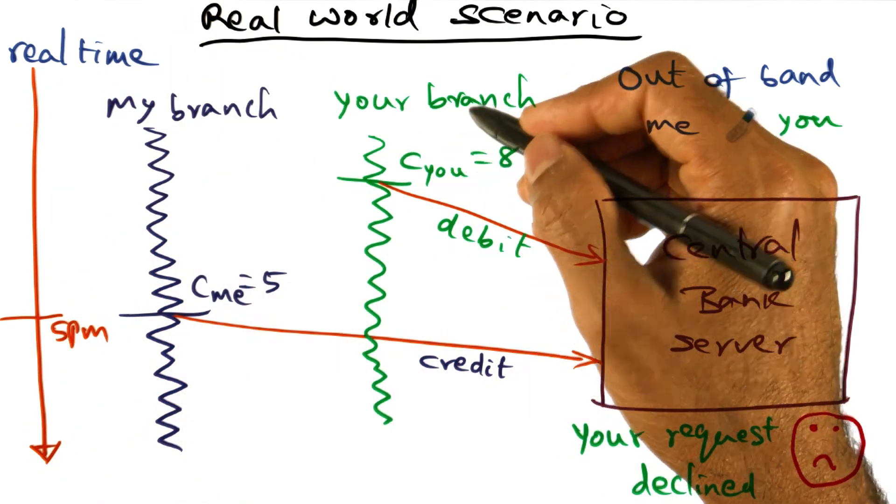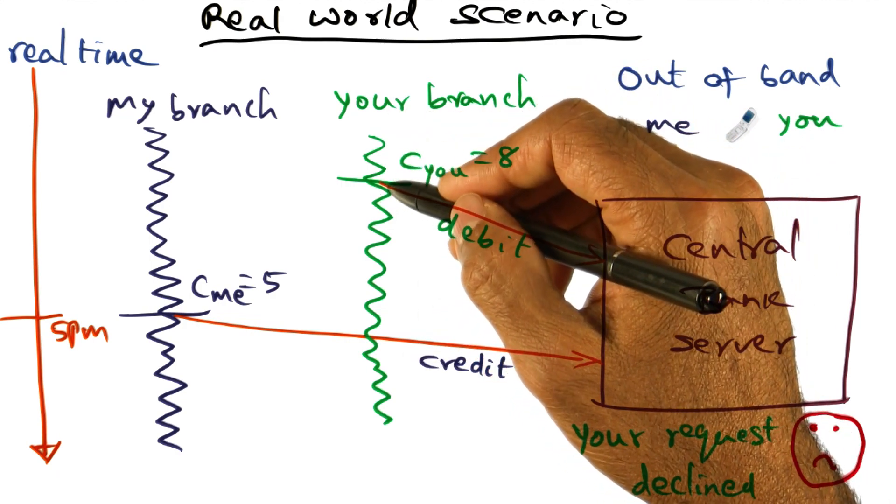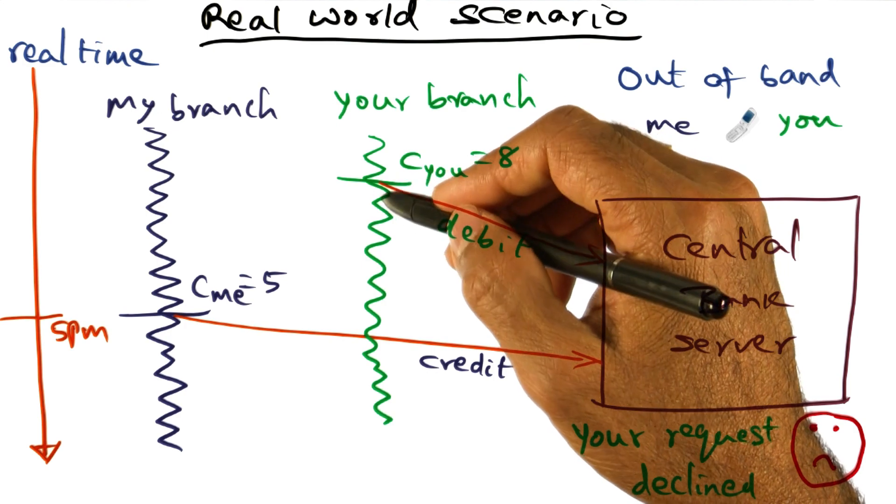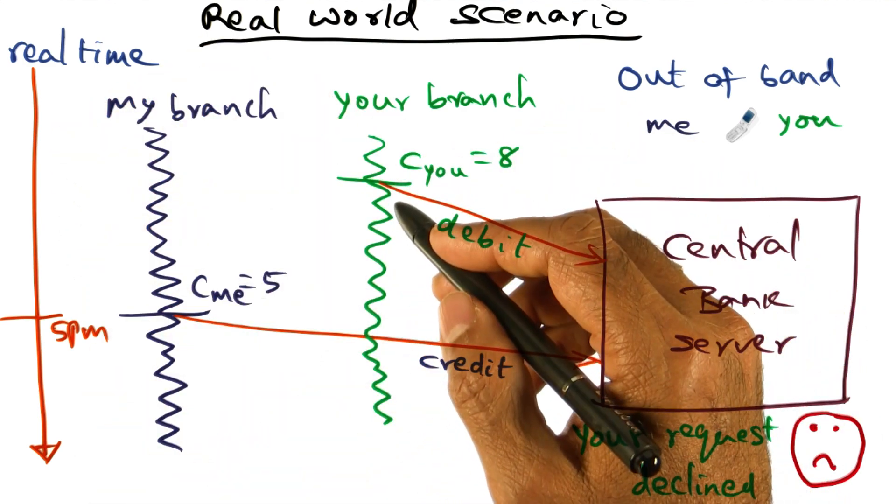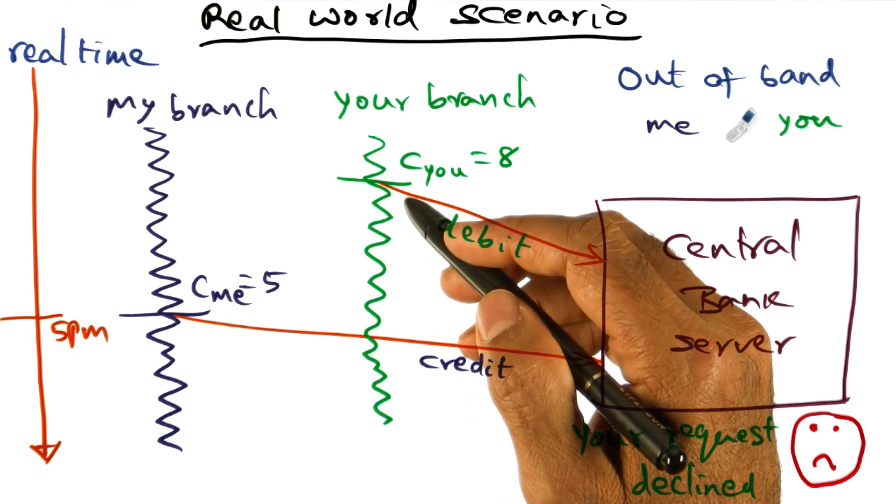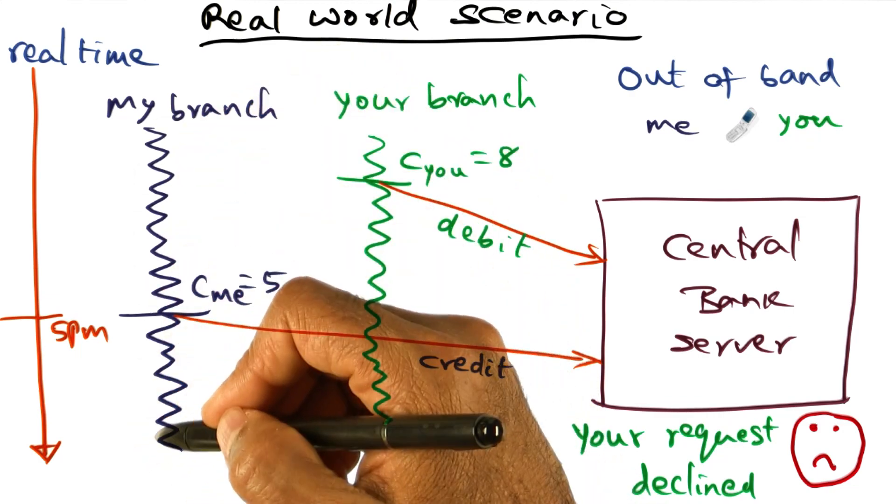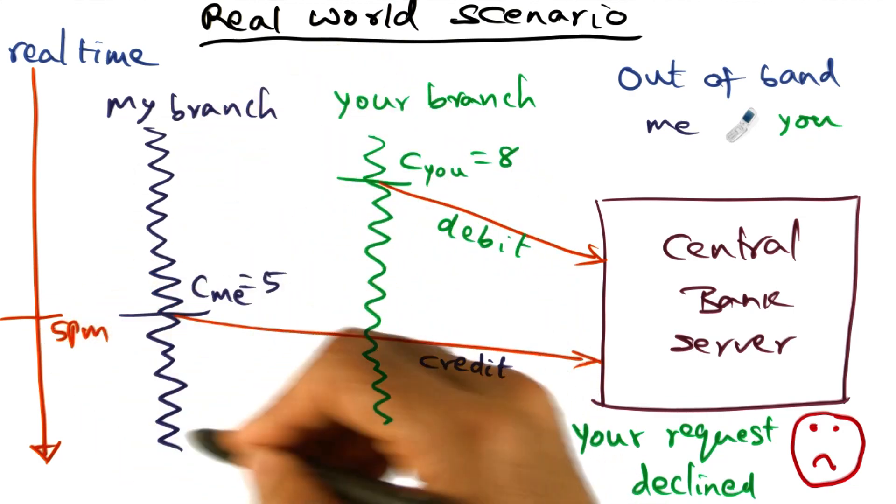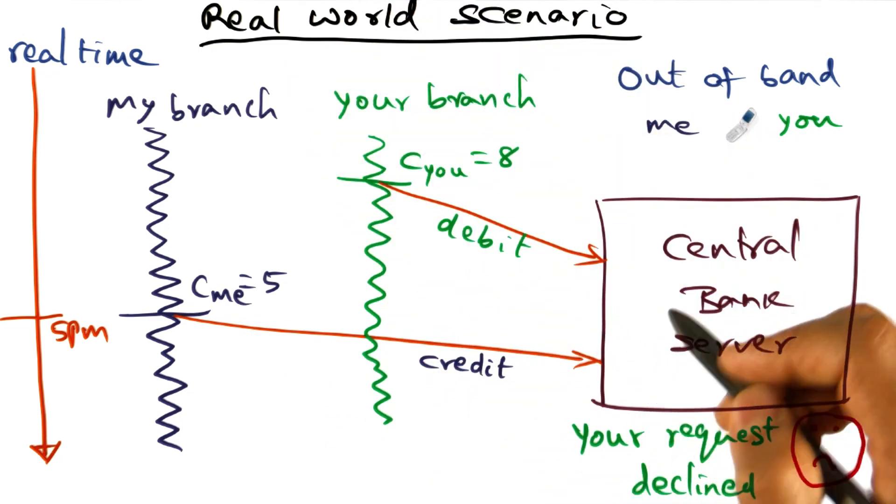And the reason that can happen is because the computer at your local bank may have a clock that is drifting with respect to real time. So it is drifting meaning that it is not keeping up with the real time. It's either going faster than real time or it is going slower than the real time. It so happens that my branch's time is perfectly in sync with the real time, but that doesn't help me. And this is the real world scenario that you have to worry about.